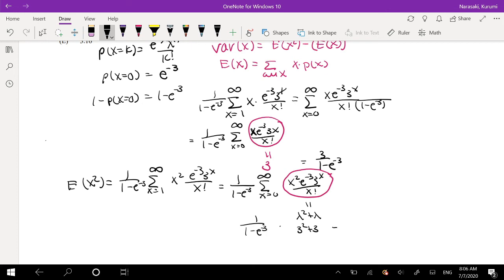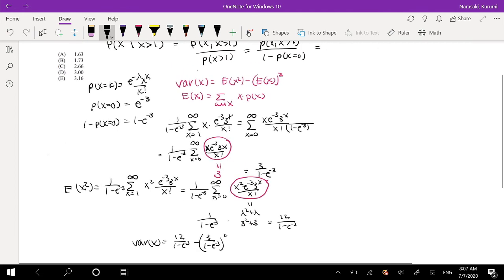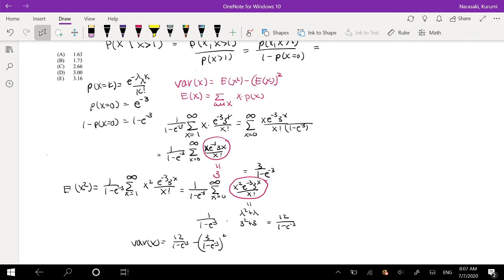So this is equal to 12 over 1 minus E to the negative 3. So then now, to find the variance, it's equal to our second moment minus the first moment squared. This whole thing squared. So I'm just going to type it into my calculator like that. So when I plug into the calculator, I get this is equal to 2.6609, which is approximately equal to our 2.66, which is your answer, C.